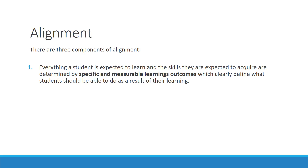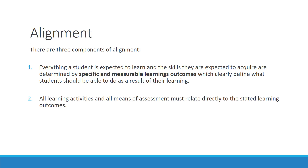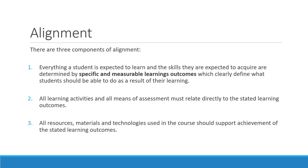First, everything a student is expected to learn and the skills they are expected to acquire are determined by specific and measurable learning outcomes, which clearly define what students should be able to do as a result of their learning. Two, all learning activities and all means of assessments must relate directly to the stated learning outcomes. And three, all resources, materials, and technologies used in the course should support achievement of the stated learning outcomes.